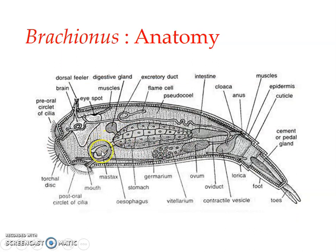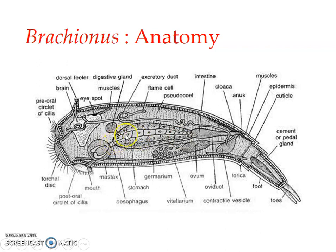The mastax is a very unique feature of rotifers and is used for capturing food, collecting food, and mechanically breaking down the food. About two to seven salivary glands are present, and the ducts from each salivary gland open into the pharynx, secreting into the pharyngeal region. The pharynx is followed by a short esophagus, which leads to a very large stomach. The stomach is the area where actual digestion and absorption take place. At the junction between the esophagus and the stomach, a pair of digestive (gastric) glands open in, secreting enzymes into the stomach. The stomach is followed by the intestine.